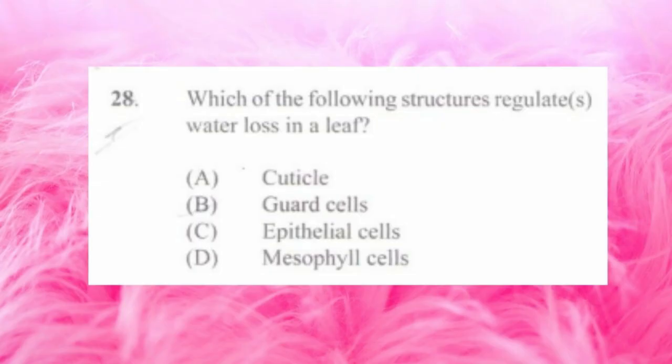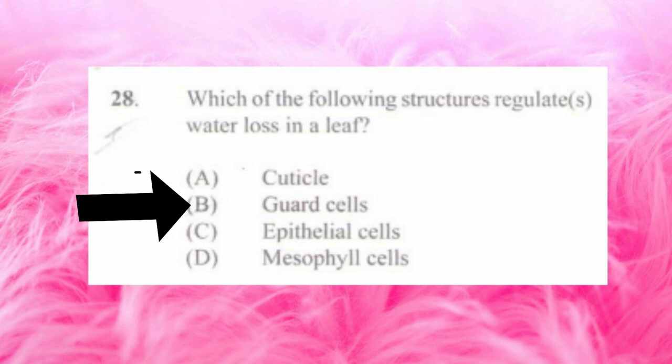Question number twenty-eight: which of the following structures regulates water loss in a leaf? a) cuticle, b) guard cells, c) epithelial cells, d) mesophyll cells. The answer is b) guard cells.